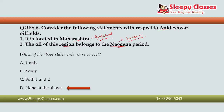The Eocene period started from approximately 56 to 33.9 million years ago. During this time, the existing mammals were replaced by the current mammals that we see today. So the current animals are basically from the Eocene period.